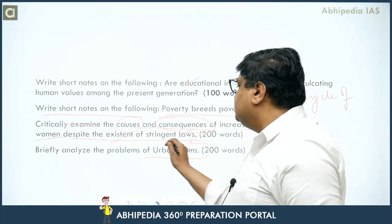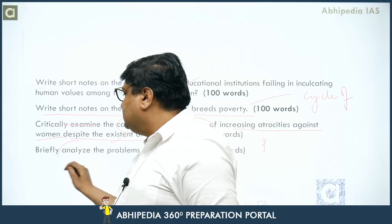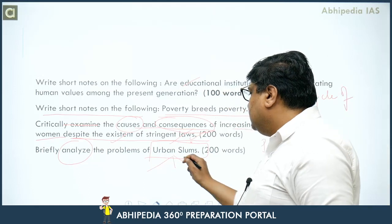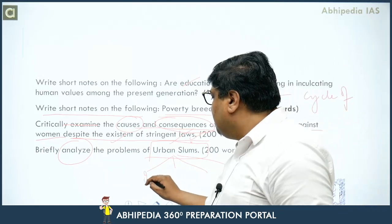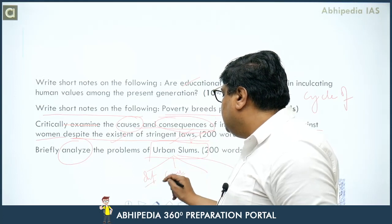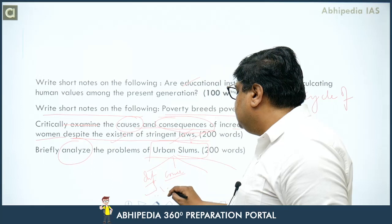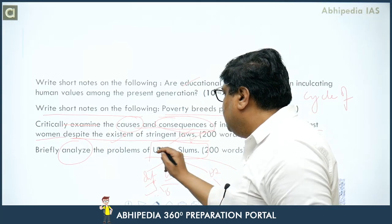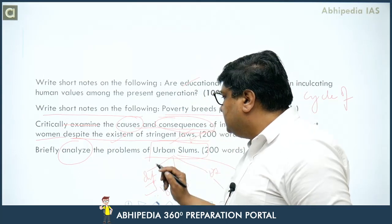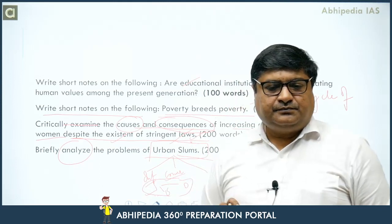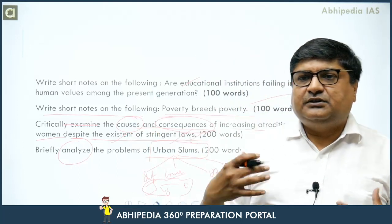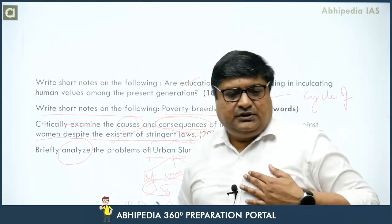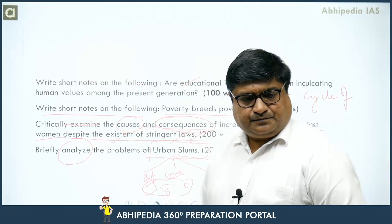Next: analyze the problems of urban slums. You analyze from different angles — infrastructure problems like housing, sanitation, and drinking water; crime; lack of educational facilities. Divide it into different parts and analyze what problems exist in urban slums, comparing with non-slum or other urban areas.